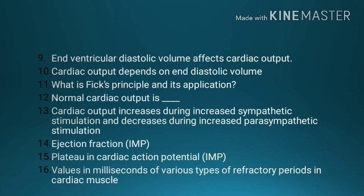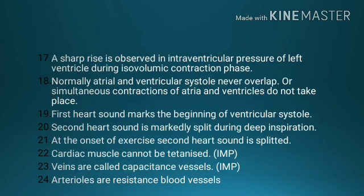Number 12, normal cardiac output. Number 13, cardiac output increases during increased sympathetic stimulation and decreases during increased parasympathetic stimulation. Number 14, ejection fraction. Number 15, plateau in cardiac action potential. Number 16, values in milliseconds of various types of refractory periods in cardiac muscle. Number 17, a sharp rise is observed in intraventricular pressure of the left ventricle during the isovolumetric contraction period.